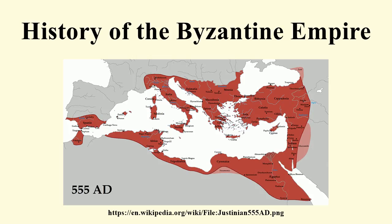Theodosius was the last emperor to rule over the full extent of the empire in both its halves. The eastern empire was largely spared the difficulties faced by the west in the 3rd and 4th centuries, due in part to a more firmly established urban culture and greater financial resources, which allowed it to placate invaders with tribute and pay foreign mercenaries. Throughout the 5th century, various invading armies overran the western empire, but spared the east.